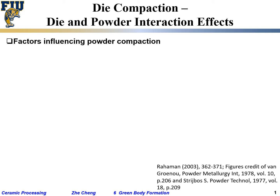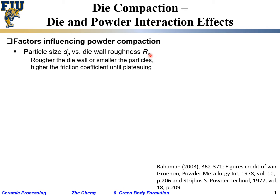The last bit is about dye and powder interaction. For particle size, we consider how big the particle is versus the dye roughness — how smooth is your dye. Quite often you would naturally expect that the rougher the dye, meaning the dye wall is not smooth and has a lot of zigzag structure, the higher the friction.